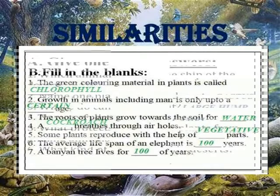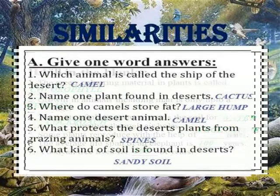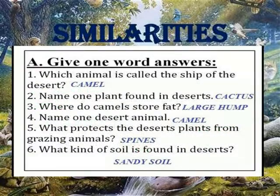Leave one word answer. Which animal is called the ship of the desert? Camel. Name one plant found in desert. Cactus.